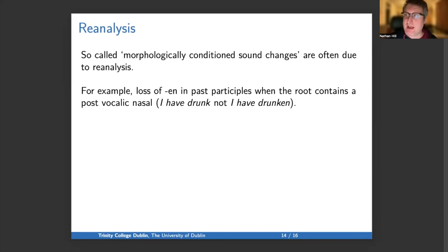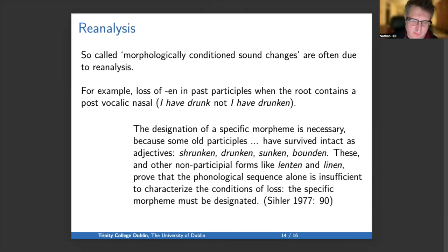I'll point to an author who understands this as a grammatically conditioned sound change. Seeler says, the designation of a specific morpheme is necessary because some old participles have survived intact as adjectives: shrunken, drunken, sunken, bounden. These and other non-participial forms, like lenten and linen, prove that the phonological sequence alone is insufficient to characterize the condition of loss. The specific morpheme must be designated.